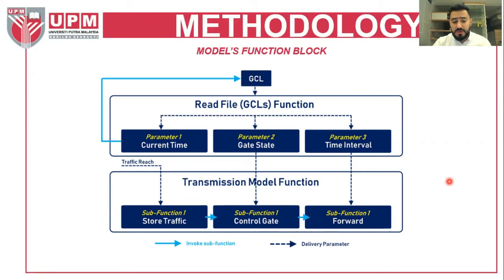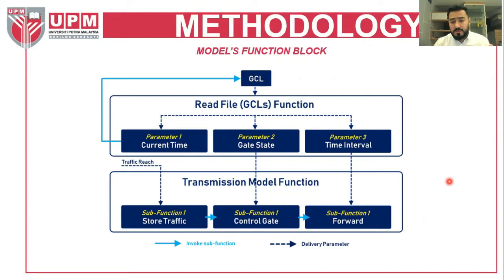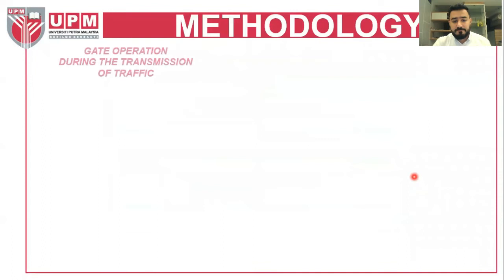Traffic reaches the stored-traffic part of the transmission model function. The gate control list read file controls the gate status — if the gate is open, traffic is forwarded depending on the time interval; if it is closed, it will not be forwarded. If the gate is open, we check if there is traffic, and if so, we forward it. If the gate is closed, we check whether the packet currently being forwarded will continue or be stopped.